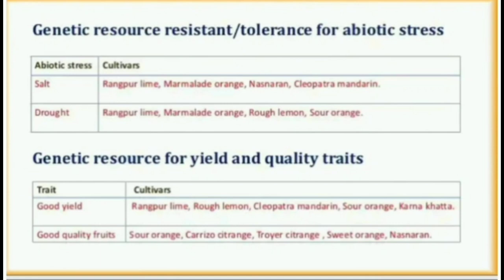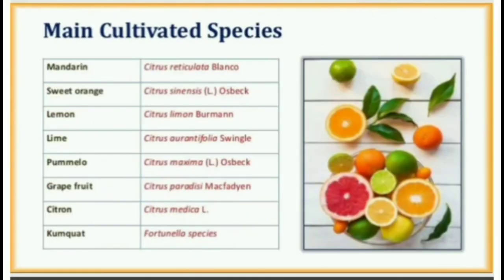Genetic resource for yield and quality traits: For good yield, cultivars include Rangpur lime, rough lemon, Cleopatra mandarin, sour orange, and Karna khatta. For good quality fruits, cultivars include sour orange, Karyzo citrange, Drier citrange, sweet orange, and Nasa naran.